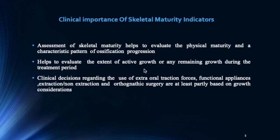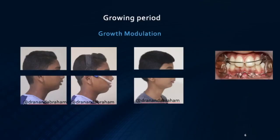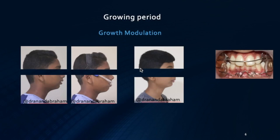Coming to the clinical importance of skeletal maturity indicators, it helps to evaluate the extent of growth over any remaining growth during the treatment period. If the patient is at the right growth stage, we can correct the patient's profile with different functional appliances depending upon the case. In this case, we can see the patient has a convex profile and a vertical growth pattern, and we try to correct it with a high pull headgear with a vertical twin block.